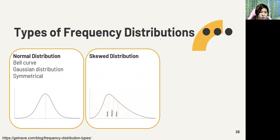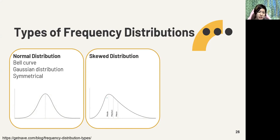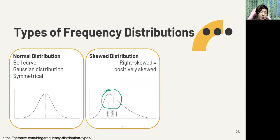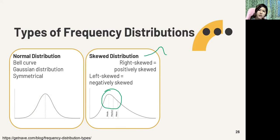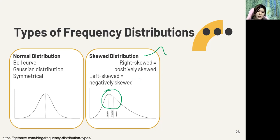Next is a skewed distribution — the curve is not symmetrical. In a left-skewed or negatively skewed distribution, the mode, then median, then mean shift to the left. Most scores are on the lower end. In a right-skewed distribution, the bulk of data is on the right side — meaning most scores are high, or conversely, most are low depending on orientation.